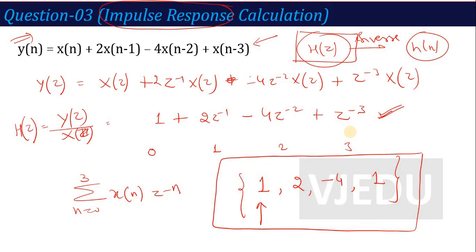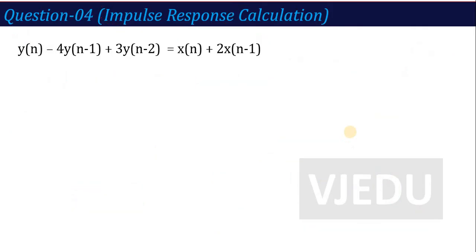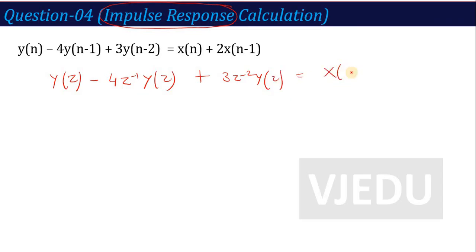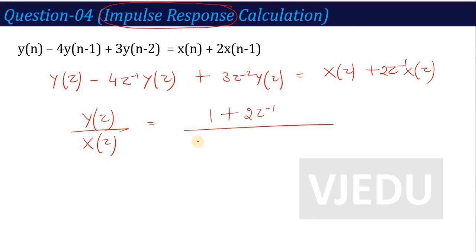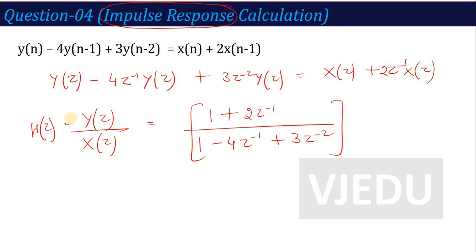Let's take another example to further clarify impulse response calculation. Given a difference equation, we again need to calculate the impulse response. First, calculate H(z) — take the Z-transform. This gives: Y(z) - 4z⁻¹Y(z) + 3z⁻²Y(z) = X(z) + 2z⁻¹X(z). So H(z) = Y(z)/X(z) = (1 + 2z⁻¹) / (1 - 4z⁻¹ + 3z⁻²). Now I need to calculate the impulse response, meaning I want the inverse of this function using partial fractions.